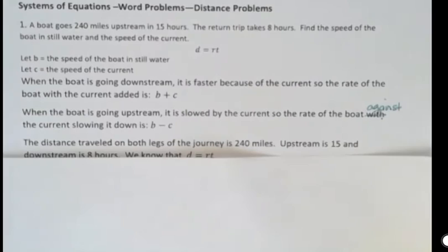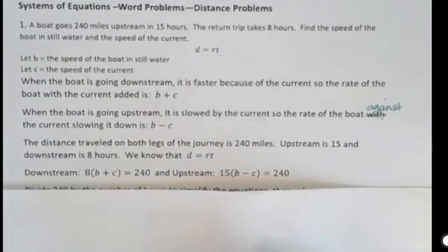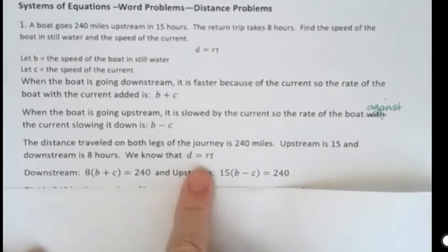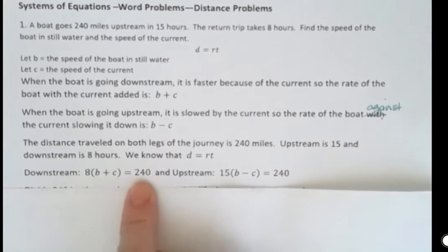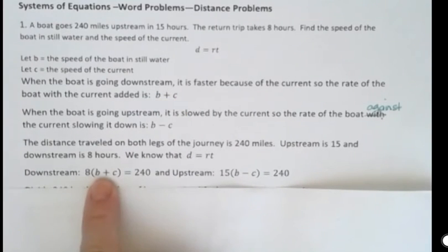The distance traveled on both legs of the journey is 240 miles. Upstream is 15 hours and downstream is 8 hours. We know that because it was given and we know that distance equals rate times time. So for downstream, we know the distance was 240 miles. We know that the rate was b plus c for downstream. That's the boat plus the current all together gave us a rate of b plus c. And the time was 8 hours.